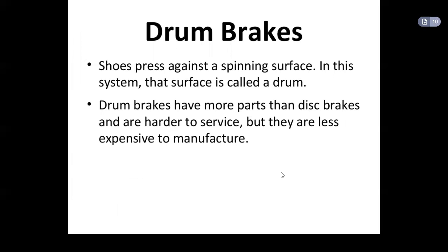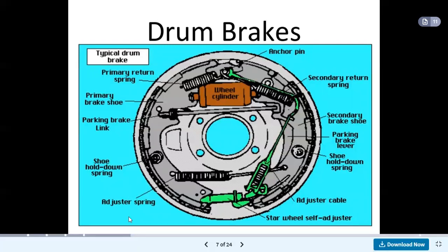Considering drum brakes: a shoe presses against a spinning surface called a drum. Drum brakes have more parts than disc brakes and are harder to service, but they are less expensive to manufacture. The diagram shows various components including primary and secondary return springs, adjuster cable, star wheel or self-adjuster, adjuster spring, shoe hold-down spring, parking brake link, primary brake shoe, and wheel cylinder.